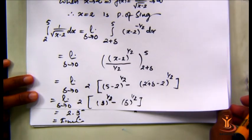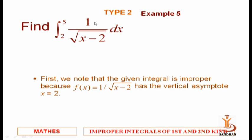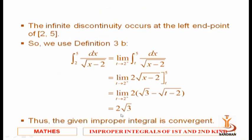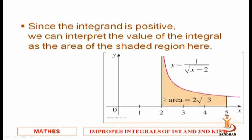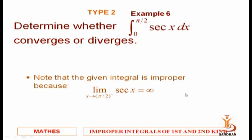The solution gives 2√3, confirming the integral is convergent. Looking at the graph of 1/√(x-2) between 2 and 5: at x=2 the function is not defined, so we consider 2 plus something. The red and blue lines show the vertical asymptote at x=2, and the shaded region represents the area under the curve from 2 to 5, which equals 2√3.